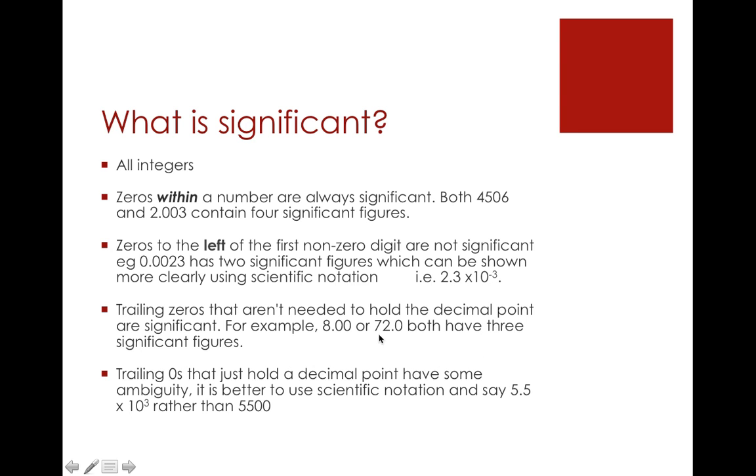If you've got a zero afterwards and it's not needed to hold the decimal point, i.e., it's not just telling us how big it is, so 4.00—those zeros are only there to tell you how accurate you're being.